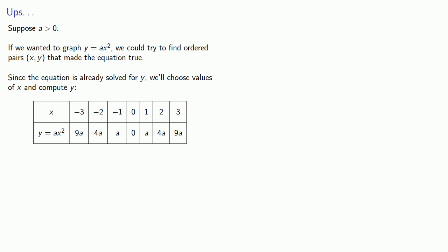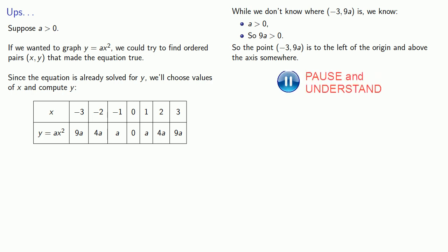So let's consider this first ordered pair, minus three, nine a. While we don't know where minus three, nine a is, we know that a is greater than zero, and so nine a must also be greater than zero. And so that means that this point, minus three, nine a is to the left of the origin and above the axis somewhere. How about here?